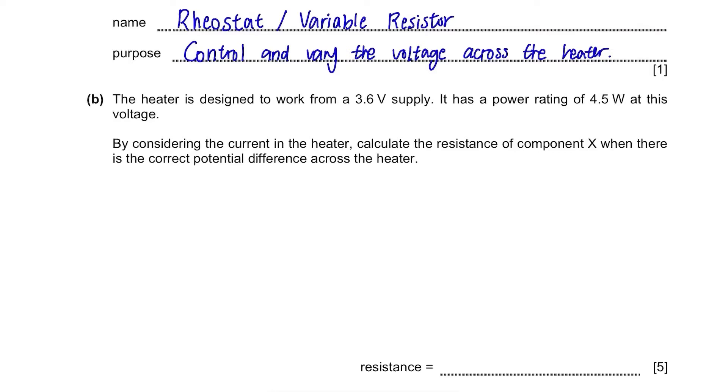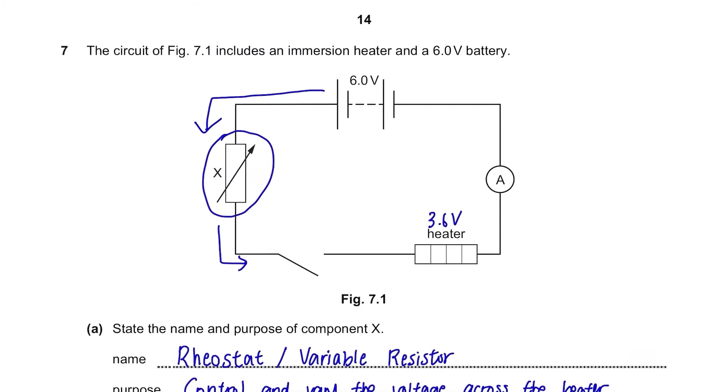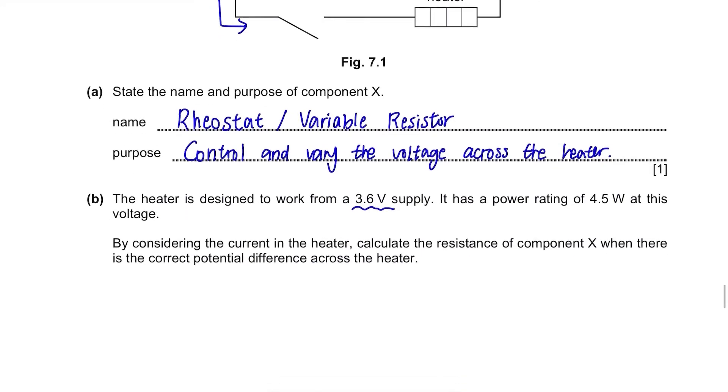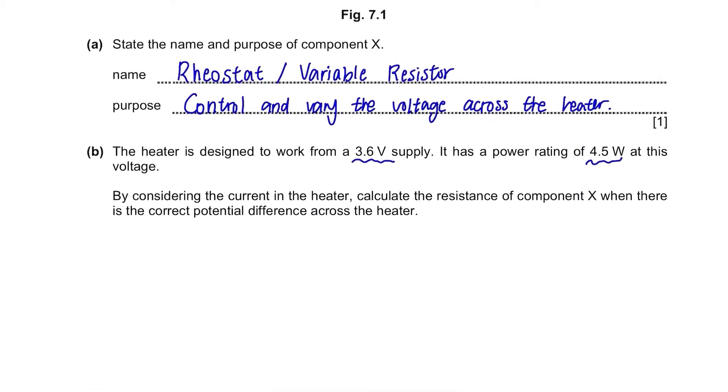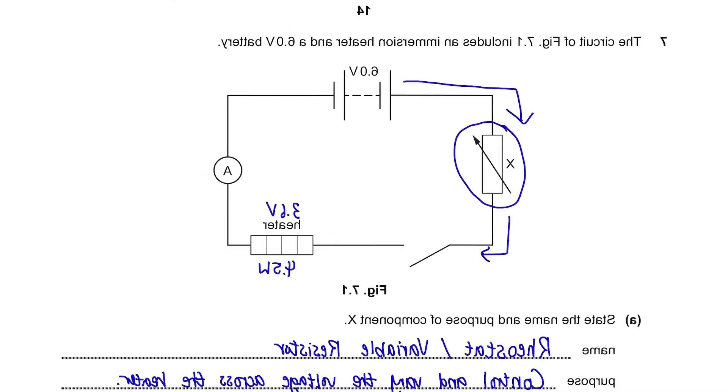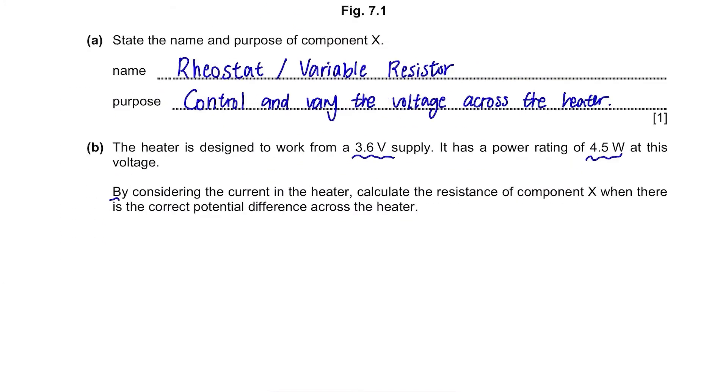The heater works with 3.6V supply, so 3.6V here, and it has a power rating of 4.5W, so 4.5W. Let's take a look at the current by considering the current. So we need to find the current of the circuit.